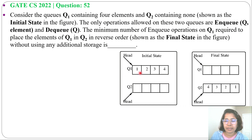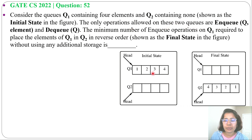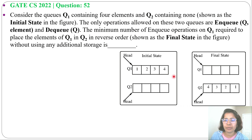Q1 contains 1, 2, 3, 4 and Q2 is empty. The only operations allowed on these two queues are NQ and DQ. NQ is always at the rear side and DQ is always at the head — we can delete from front and insert at back.